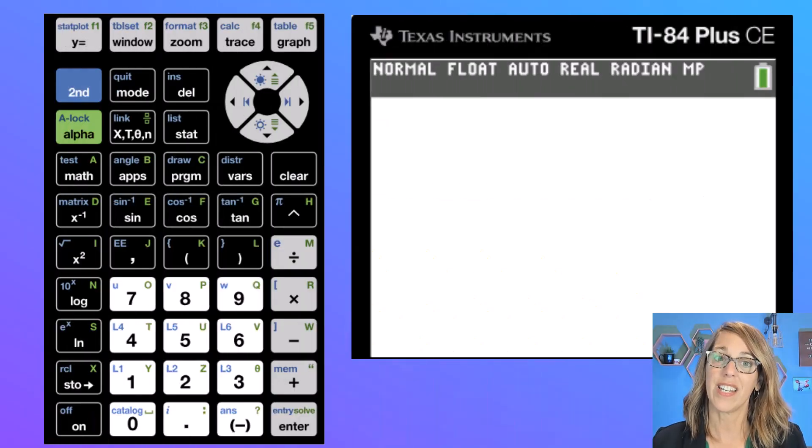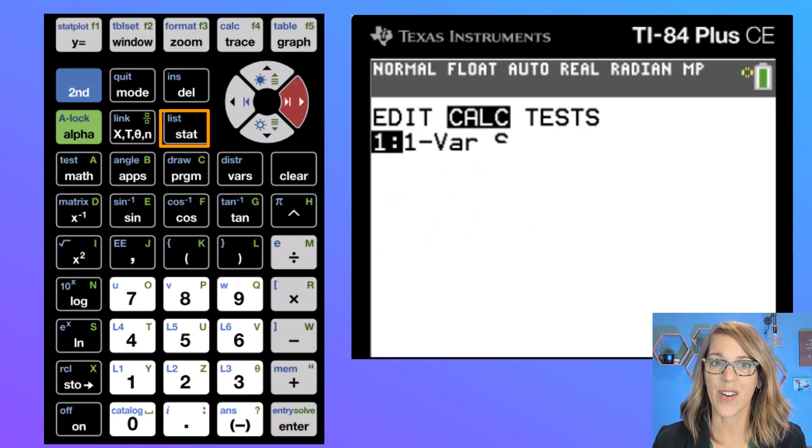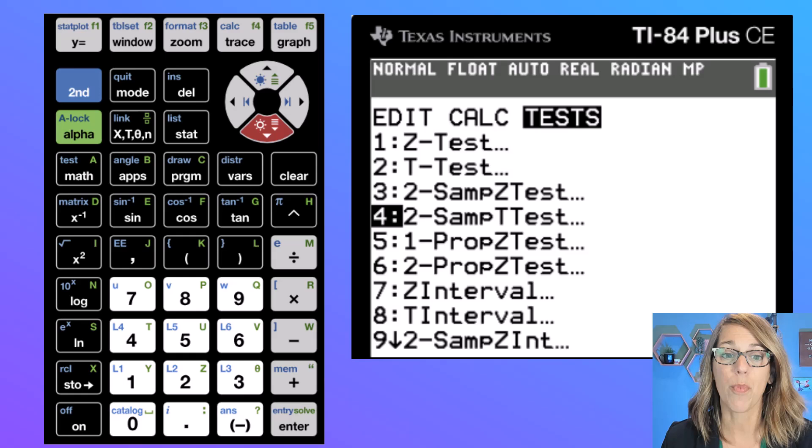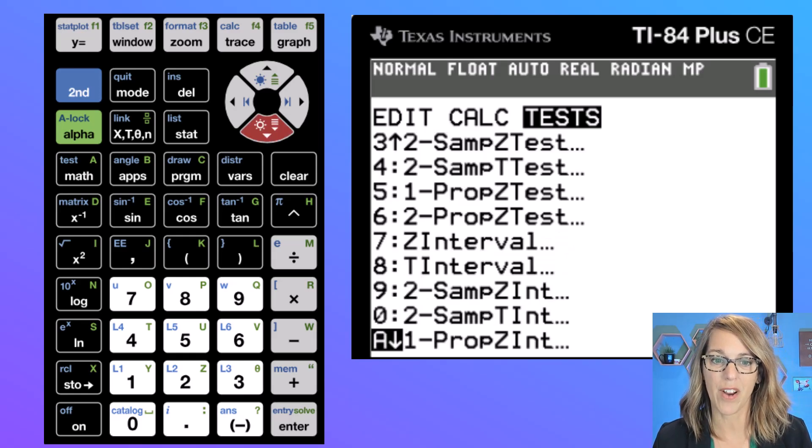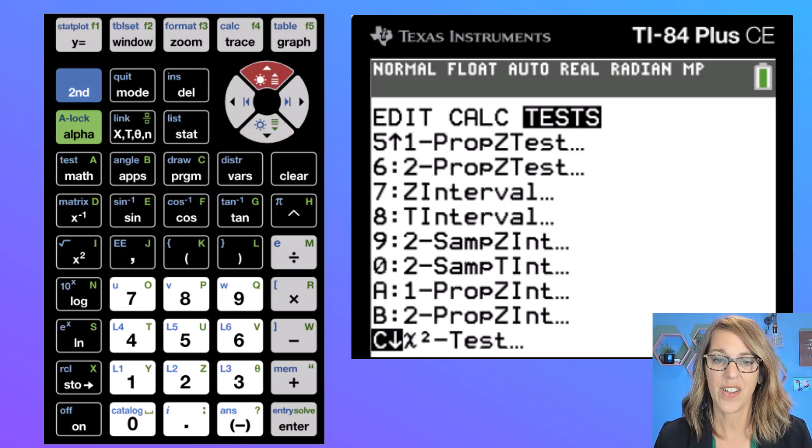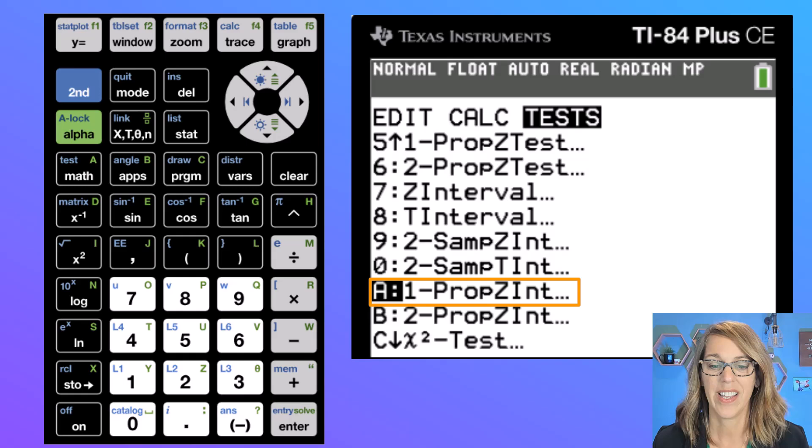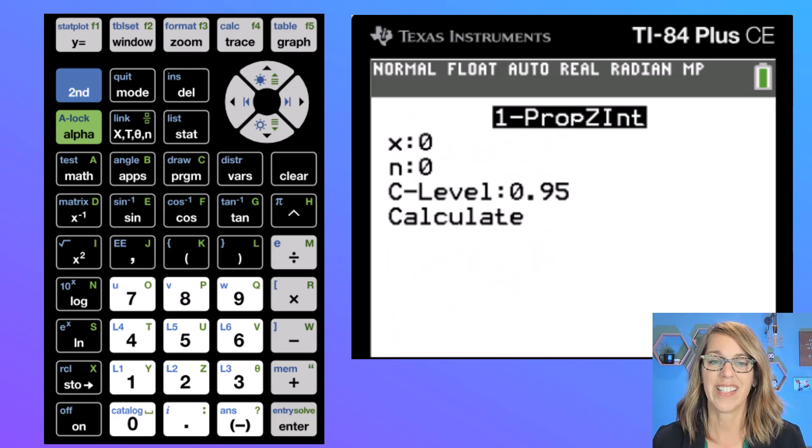All of this lives in the stat menu so I'm going to go to stat and then arrow over to tests and then I'm going to arrow down until I find a proportion interval. So as I'm arrowing down I find it right here I've got a one proportion z interval or a two proportion. We just have that single sample of 500 students so this is a one proportion z interval. I'm going to hit enter and it's asking me for all of these things. It wants to know what x is, what n is, and what our confidence level is.